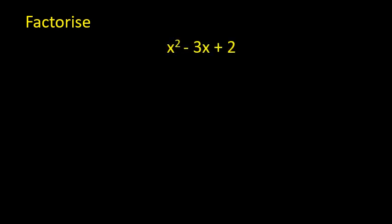In this video, we'll be looking at factorising quadratic expressions using the window method. Here I have an expression involving a quadratic term x squared, and I want to factorise it into two brackets. We have already looked at expanding double brackets to give a quadratic expression, and now we want to do the reverse.